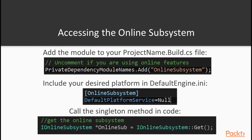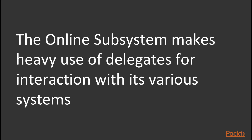To use the Online Subsystem, you first need to include the module inside your project's build.cs file by adding the private dependency module name 'OnlineSubsystem'. You'll then need to indicate your default platform service in your DefaultEngine.ini file under an OnlineSubsystem tag. With that done, you access the Online Subsystem within code by calling the getter method: IOnlineSubsystem::Get.